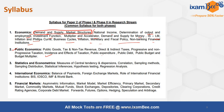Statistics and Econometrics topics include measures of central tendency, dispersion, correlation, sampling methods and distributions, statistical inference, hypothesis testing, and regression analysis. International Economics covers balance of payments, forex markets, and the role of international financial institutions such as BIS, WTO, IMF, and World Bank.